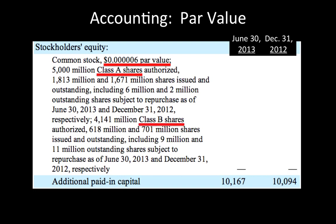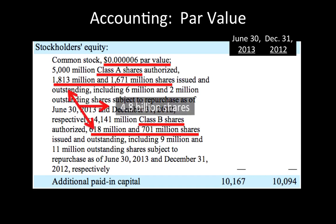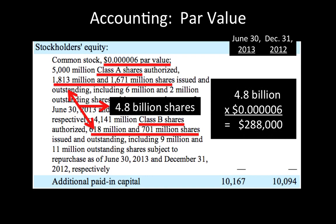There are two classes of shares: Class A and Class B. There are about 3.5 billion outstanding Class A shares and about 1.3 billion outstanding Class B shares, for a total of 4.8 billion shares outstanding. 4.8 billion times six ten-thousandths of a cent equals $288,000. The values in the right-hand columns are expressed in millions, so $288,000 rounds down to zero.